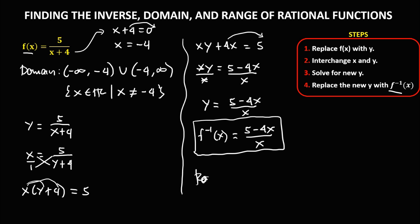To find the range from the inverse, if x equals 0, then this function becomes undefined. Therefore, the range is from negative infinity to 0, union 0 to positive infinity — all real numbers except x equals 0.